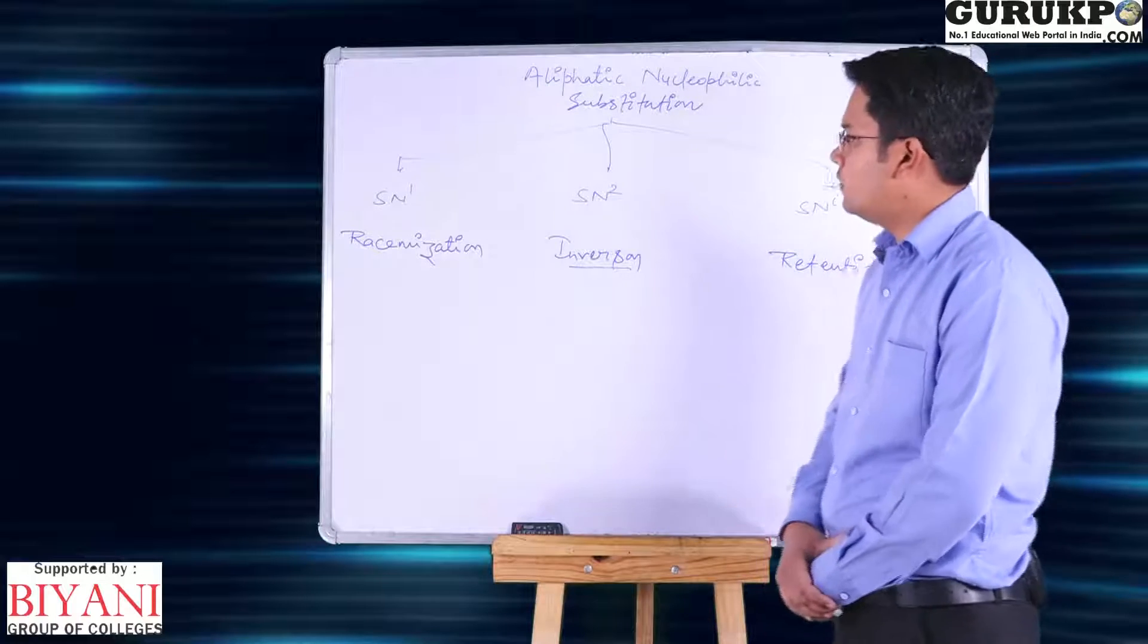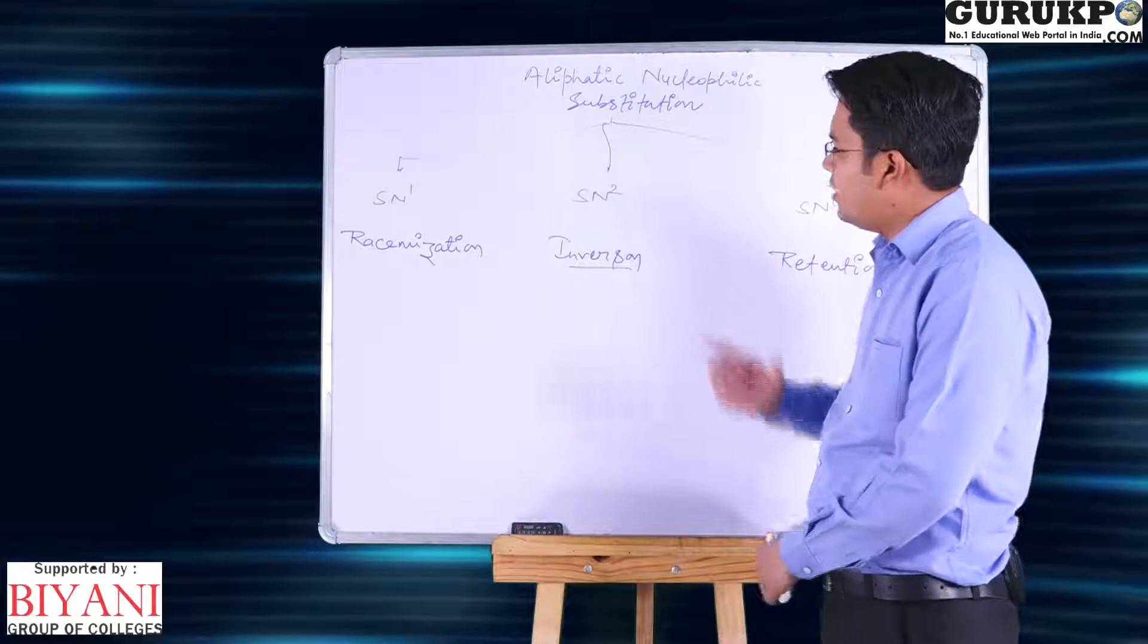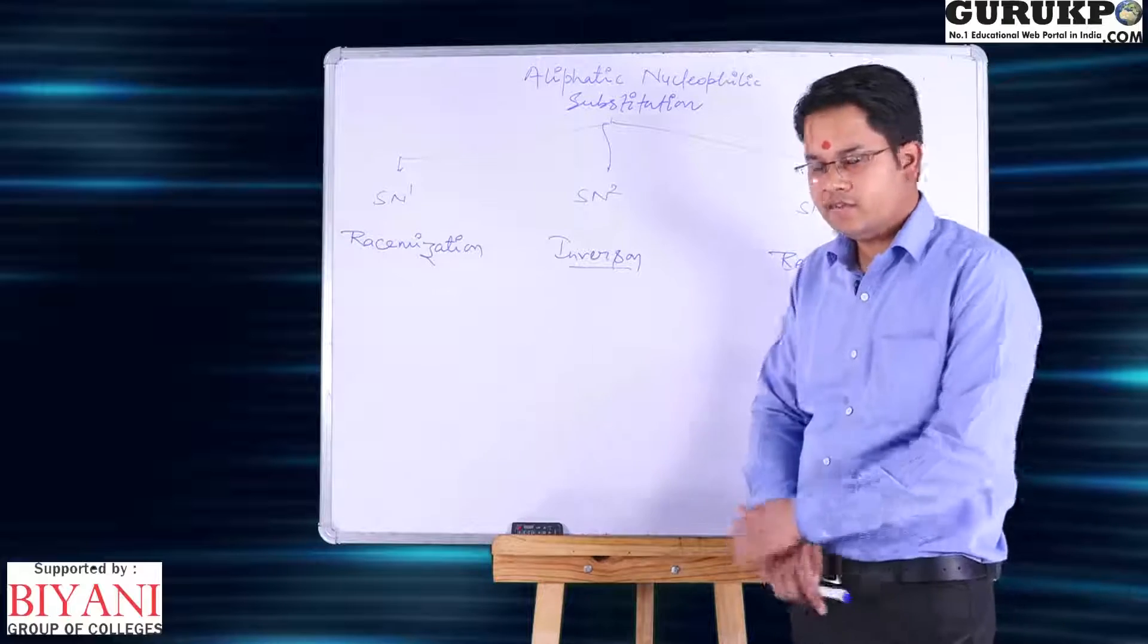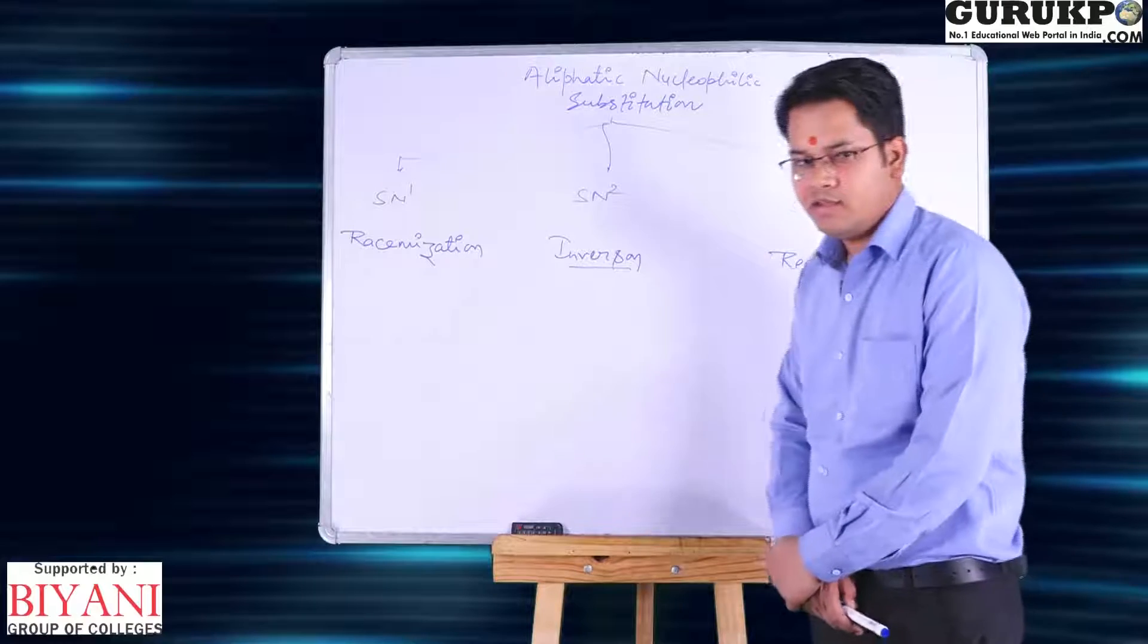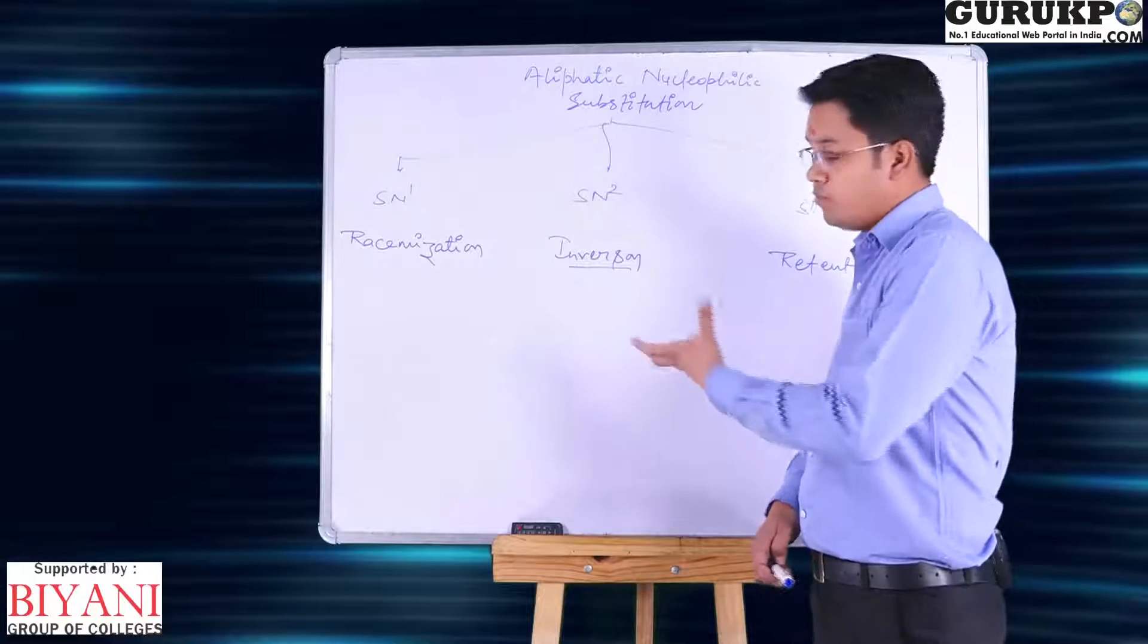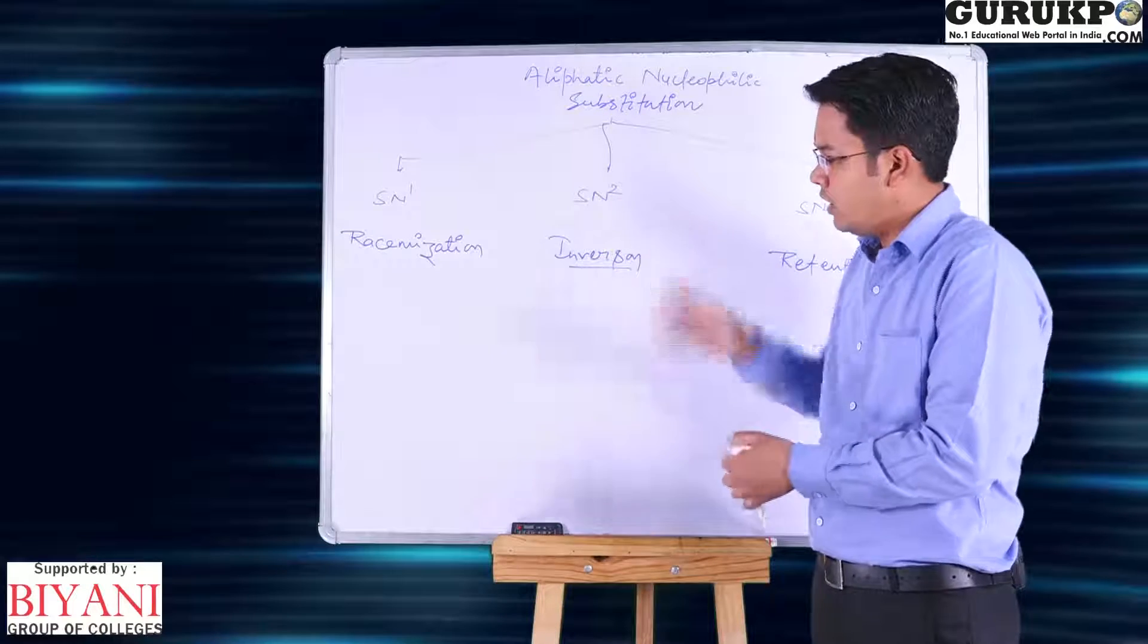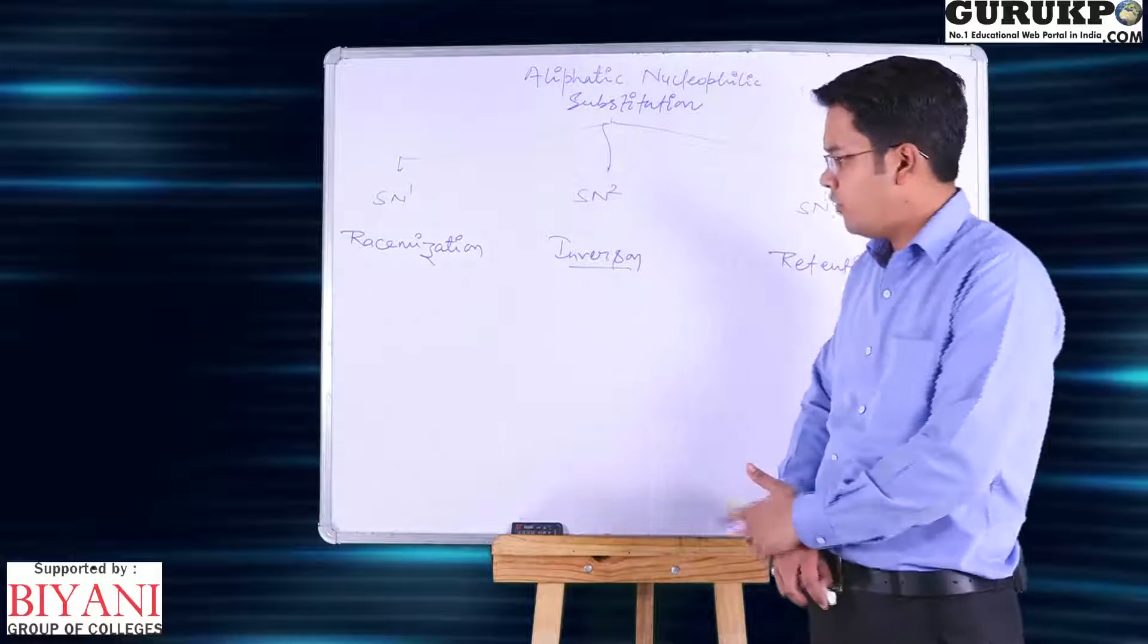The part of aliphatic nucleophilic substitution reaction is first one is SN1, second one is SN2, and third one is SNi. In first part when the product is formed, what is the stereochemistry of product that can be decided by its kinetics, because in SN1 reaction carbocation is intermediate form.